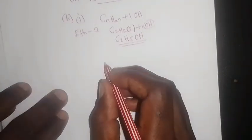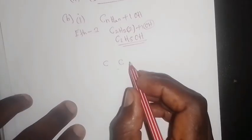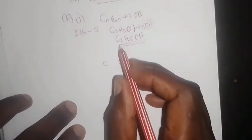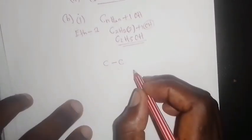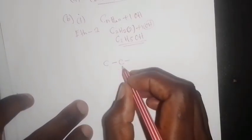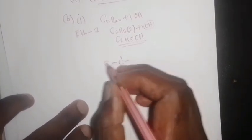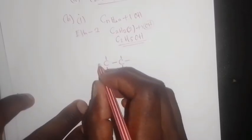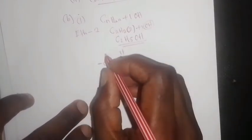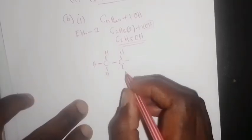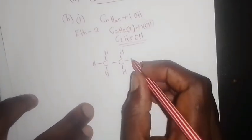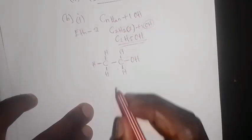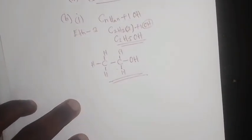Now you have to draw the displayed structure. You have two carbons — carbon one and carbon two. This is coming from alcohol, so the bond between carbon to carbon is just a single bond, and then each carbon should have four bonds. You put the H atoms around and add the OH group. This is the structure they wanted.